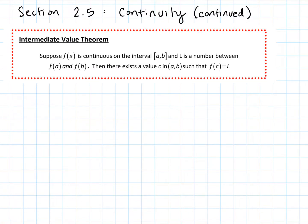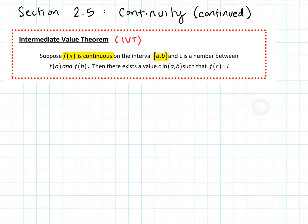Let's wrap up our section on continuity with one more incredibly useful theorem called the Intermediate Value Theorem. What the Intermediate Value Theorem — I'll abbreviate this IVT — says is this: suppose that we have a continuous function on a closed interval, and if L is some number in between F of A and F of B, then there must exist a value C in the open interval from A to B such that F of C is equal to L.